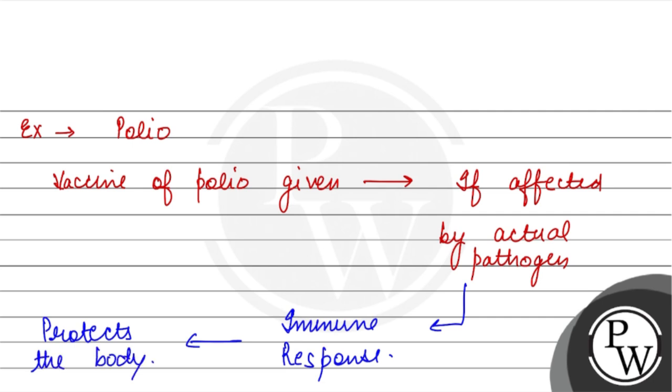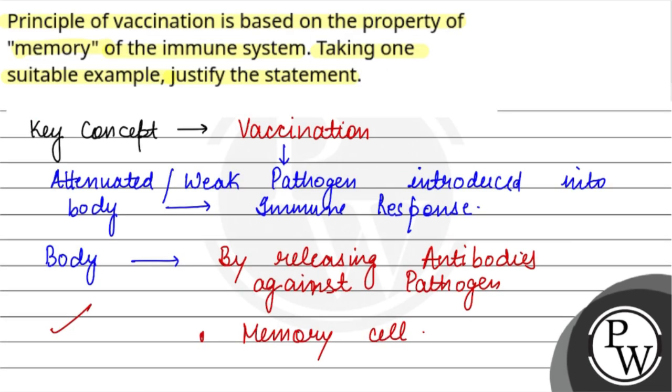How does it protect it? Because now when it comes to the actual pathogen, our body will recognize with the help of memory cells that this pathogen has already been encountered. They know that particular pathogen earlier, so now they will generate a good amount of immune response against that particular pathogen and are able to protect the particular person. That's how the particular vaccination is based on the property of memory.